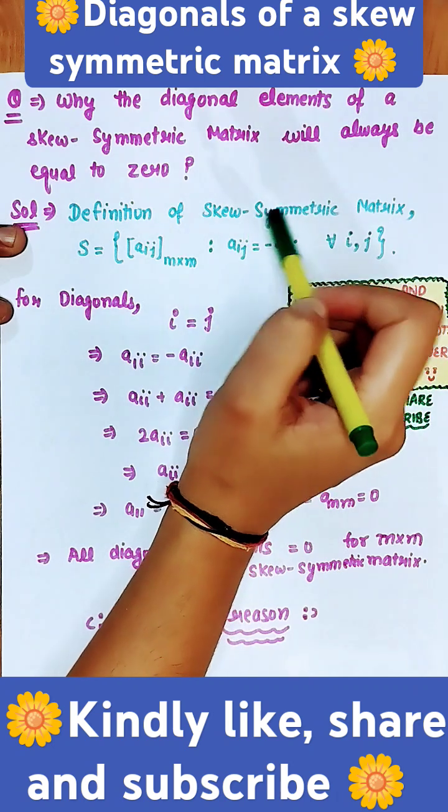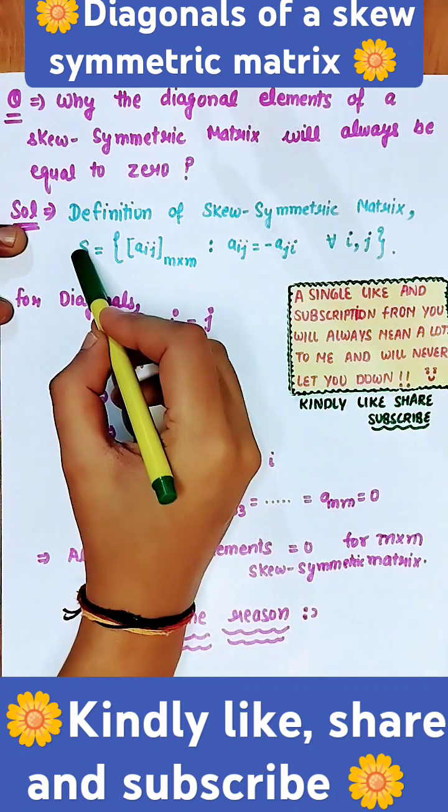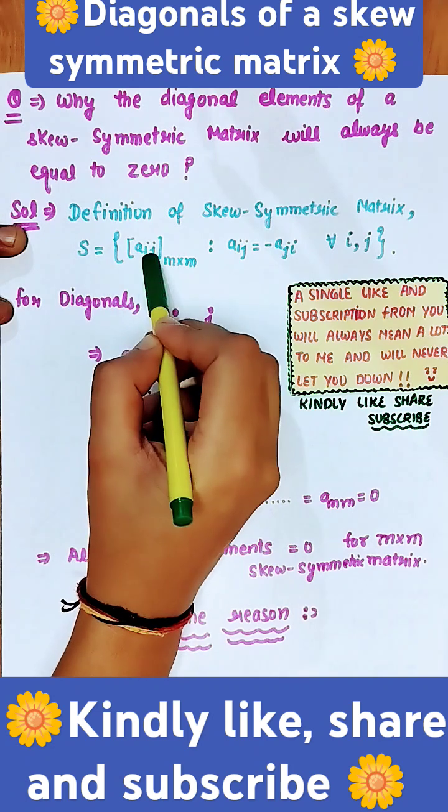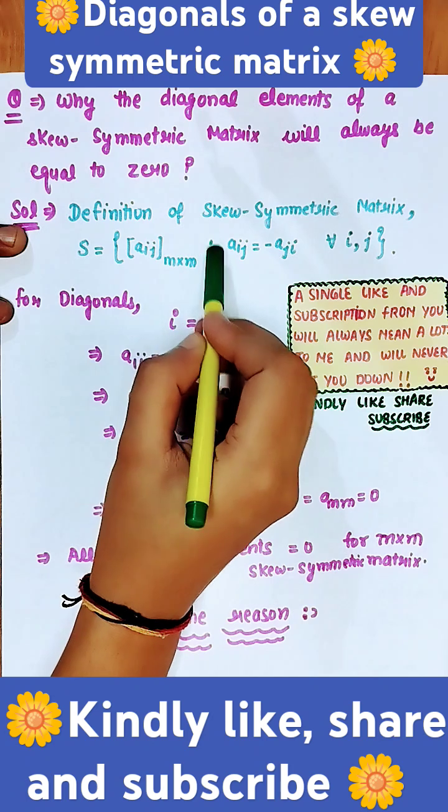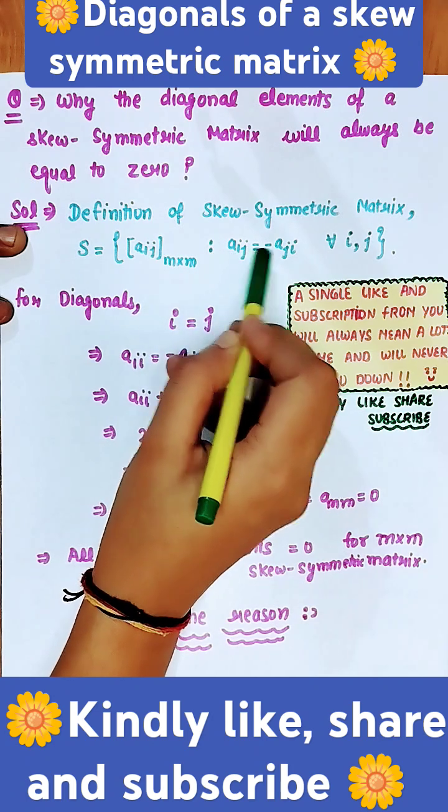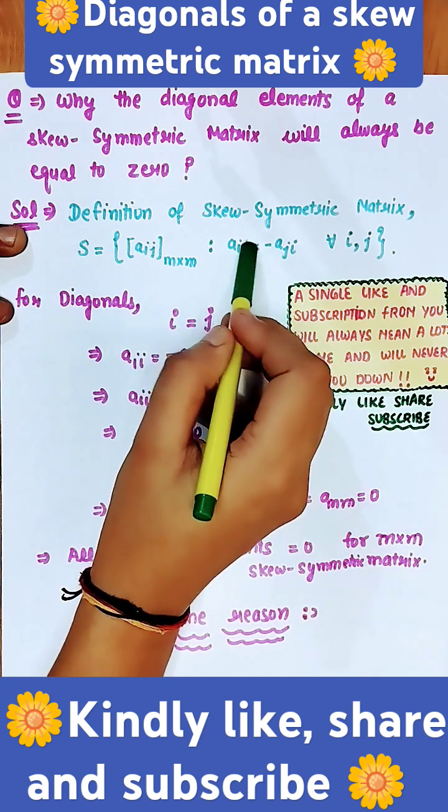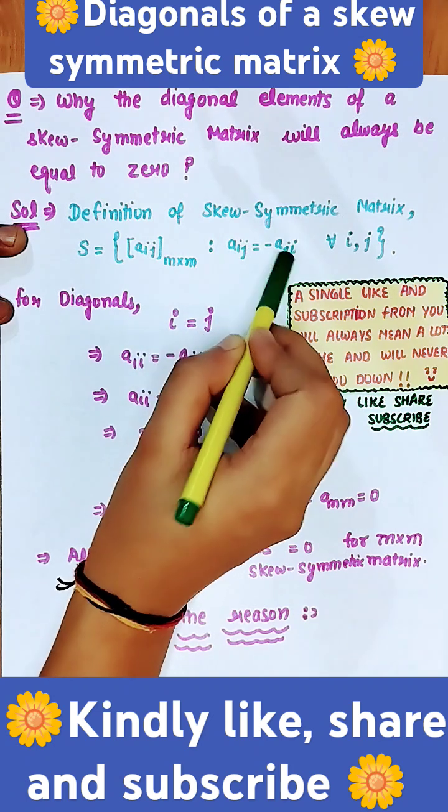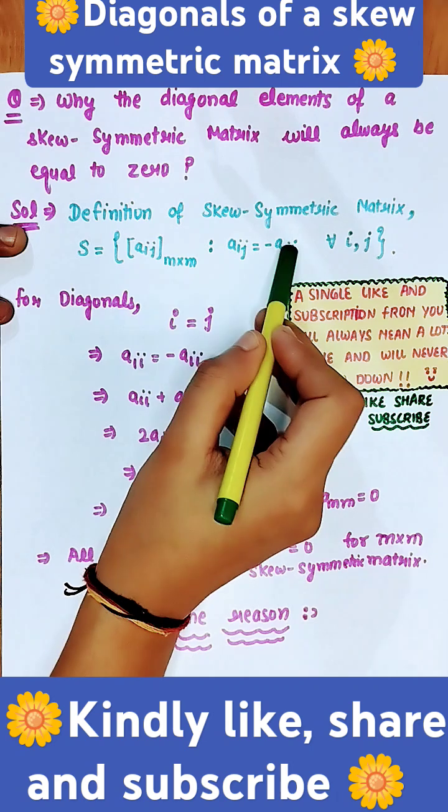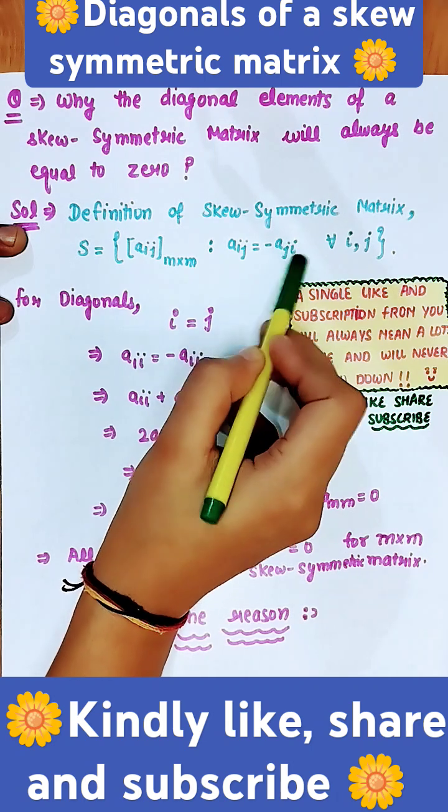We are using the definition of skew-symmetric matrix, which says that S = [Aij] are the elements of a skew-symmetric matrix of order m×m such that Aij = -Aji, where Aij are the elements of i-th row and j-th column and Aji defines the element of j-th row and i-th column.